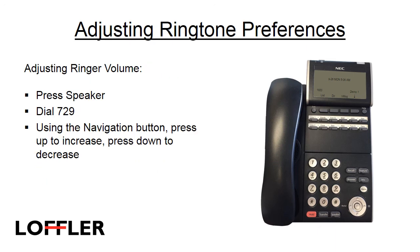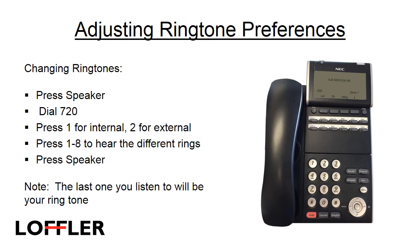To adjust your ringer volume, press the speaker and dial 729. Using your navigational button, press up and down to increase and decrease the volume. To change your ringtone, press the speaker button, dial 720, then press 1 for internal and 2 for external. Press 1 through 8 to hear the different rings. The last ring you hear will be your ringtone. Press speaker to confirm.